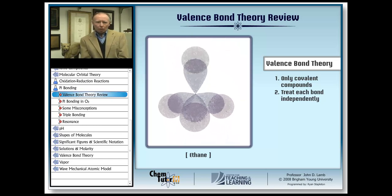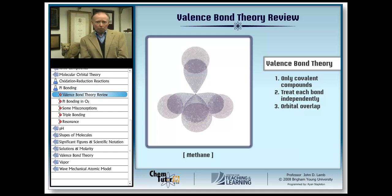Third, each bond results from the overlap of the unpaired electron orbital on one atom with the unpaired electron orbital on its neighbor, like the hydrogen 1s orbital overlapping with the sp3 hybrid on the carbon atom in methane shown here.